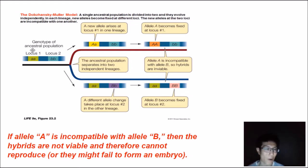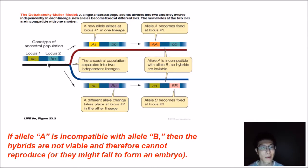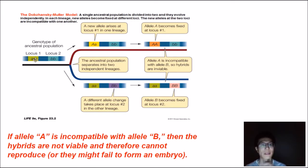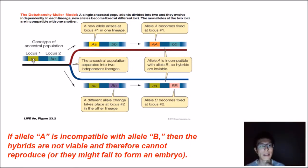Let's look at this ancestral population. The genotype at locus one is little a, little a, and at locus two it is little b, little b. Over time, maybe a mutation event or the arising of a novel allele occurs. So locus one, which was originally little a, little a, now becomes big A, little a in this population.